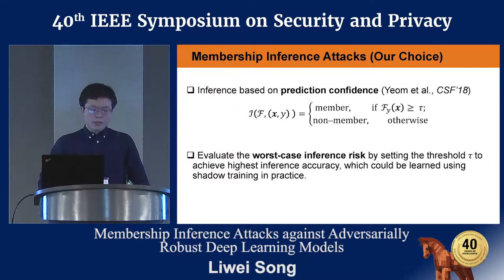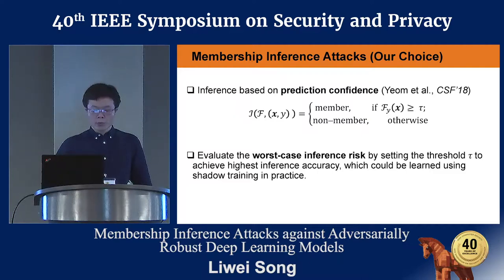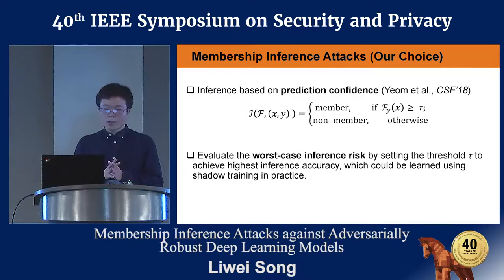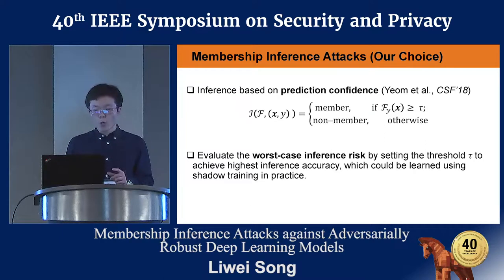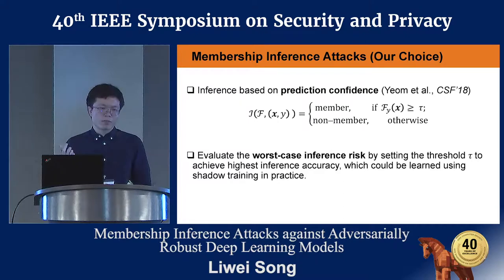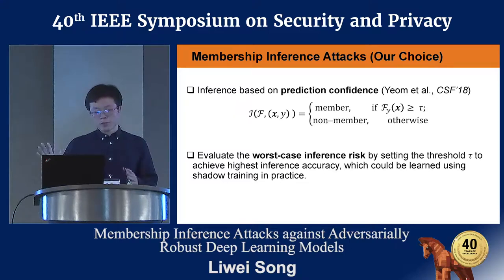Later work showed we don't need all the final prediction outputs — we can just use one scalar value, which is the prediction confidence. The target model is F, the input feature is X, and the ground truth label is Y. We only use one value: F_Y(X), the prediction probability corresponding to the correct label Y. We compare this confidence with a preset threshold — if confidence is larger, we classify the input as a training member; otherwise, it's not a member.